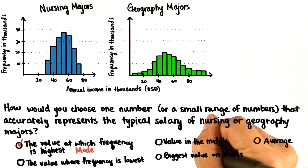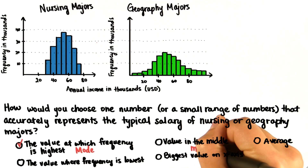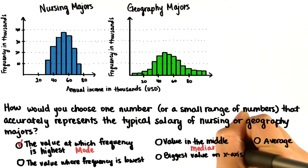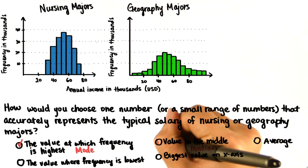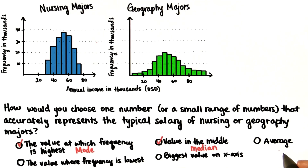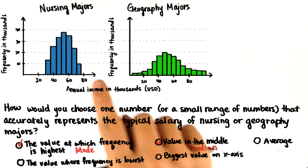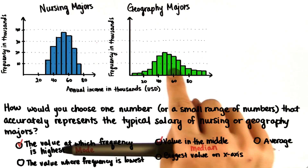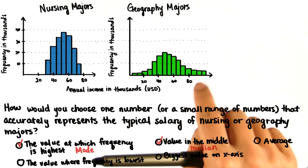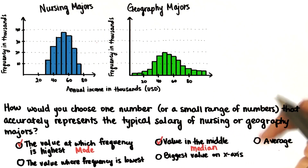The value in the middle of the distribution is called the median, and this would also work. We'll go more into depth later. And finally, the average is a statistic that rests at a specific spot in the middle of the distribution. We're going to elaborate on this in this lesson.